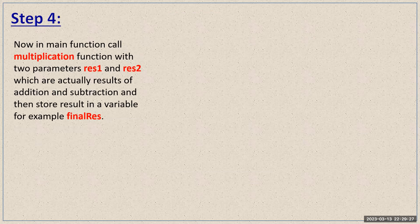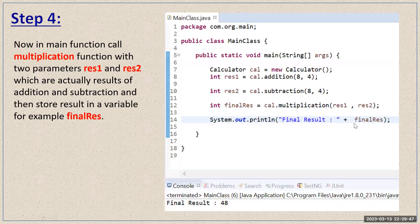In the fourth step, you have to call the multiplication function of the Calculator class, and this time pass the two parameters res1 and res2 — which are the results of the addition and subtraction functions. Whatever result you get from the multiplication function, store it in a variable called finalRes.